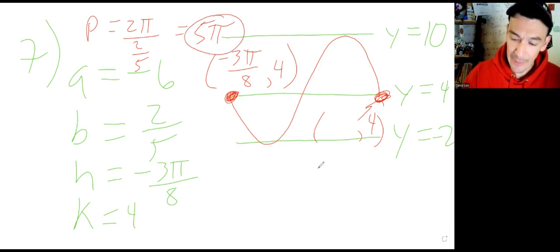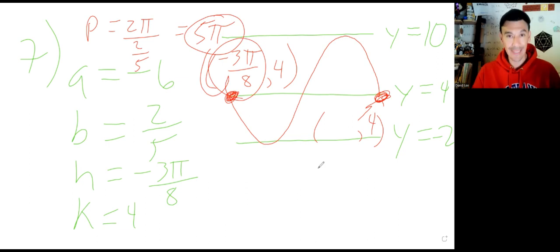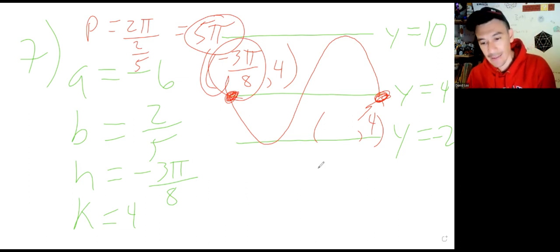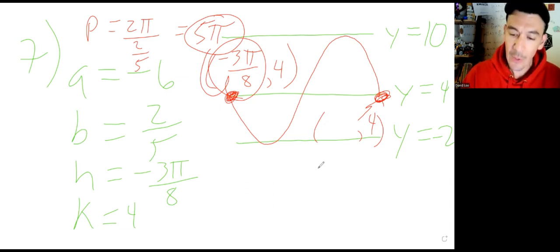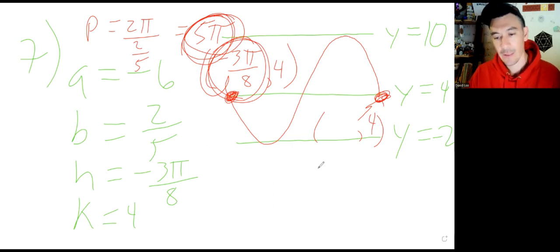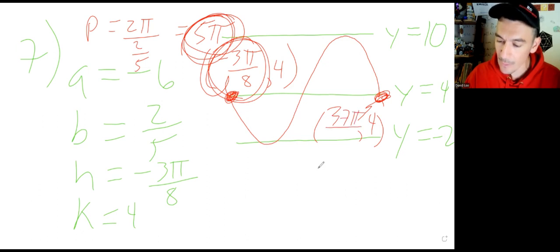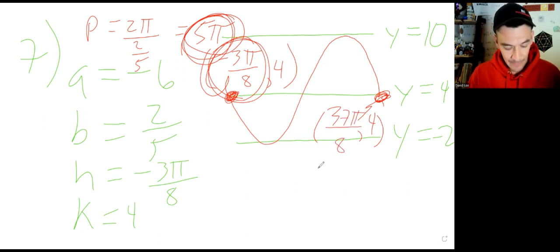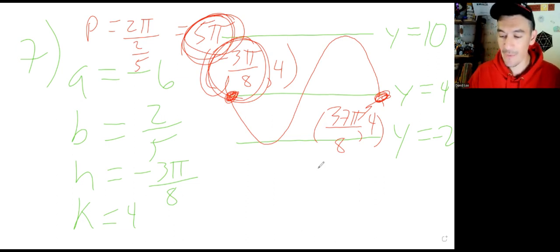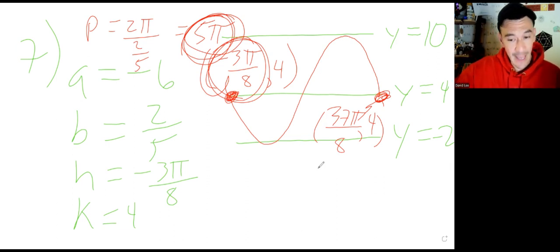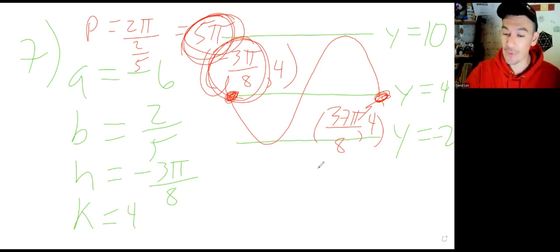Take the period and add it to H to find the end x-coordinate. So 5 pi plus negative 3 pi over 8 gives 37 pi over 8. The graph opens down because A is negative, with beginning at H comma K and ending at 37 pi over 8 comma K, with top, middle, and bottom reference lines established.